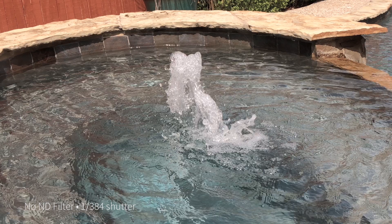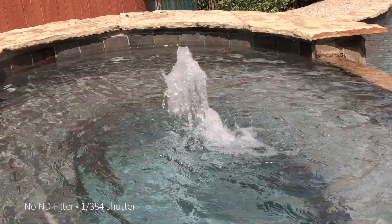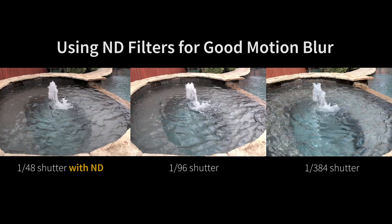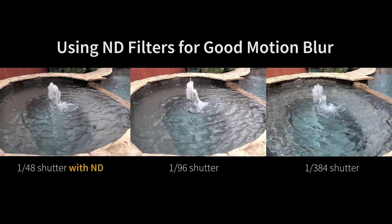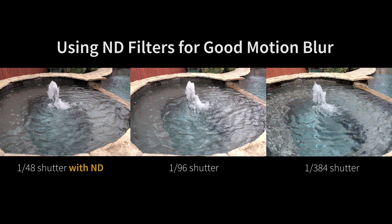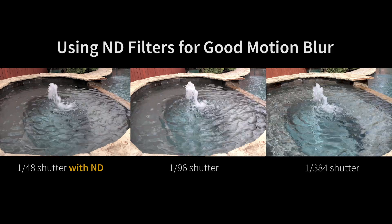In still photography, sometimes a high shutter speed is great — you can capture something in the moment, you can capture that drop. But in video, typically speaking, you want the blur. It just looks more like a movie. It looks more dreamy, more cinematic.